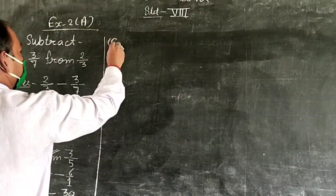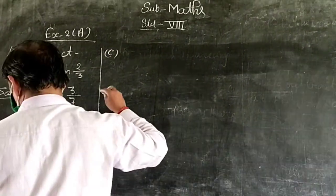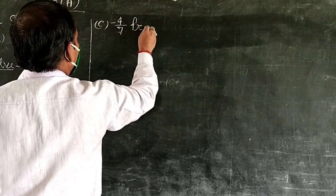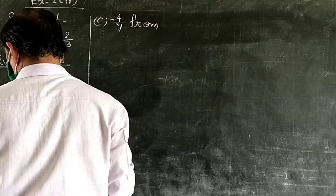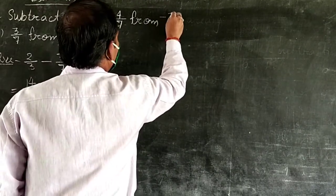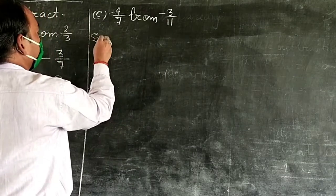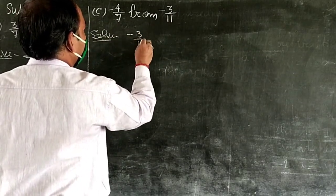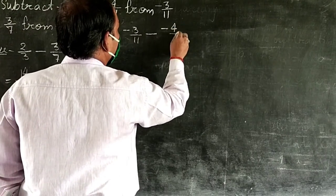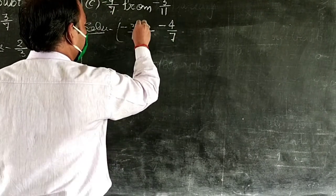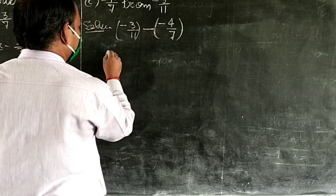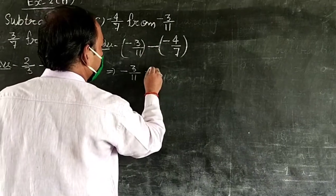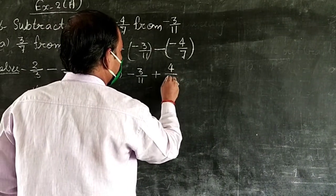Part C: Subtract minus 4 upon 7 from minus 3 upon 11. Solve: minus 3 upon 11 minus minus 4 upon 7. When we break the brackets, minus times minus becomes plus, so minus 3 upon 11 plus 4 upon 7.